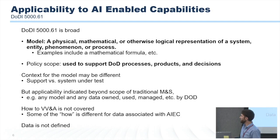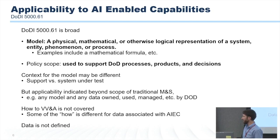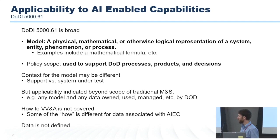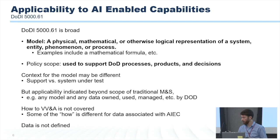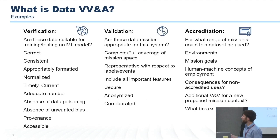Interestingly, even though this policy defines data VV&A, it actually doesn't define data. And that's going to be an interesting nuance when we deal with AI models as well — where even what we consider the data might be different for an AI model. So what do we mean when we say data VV&A from a practical perspective?